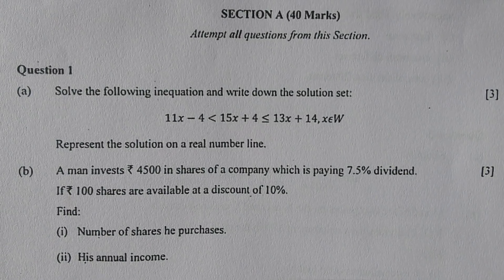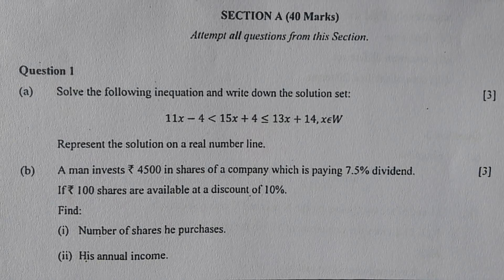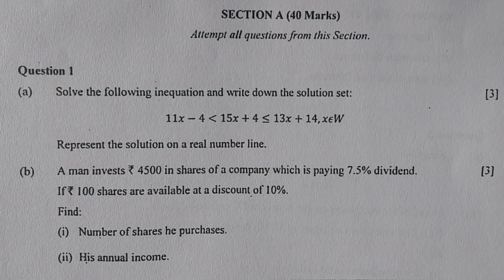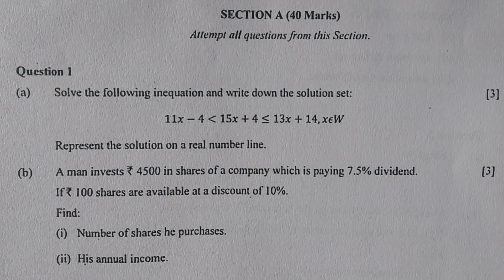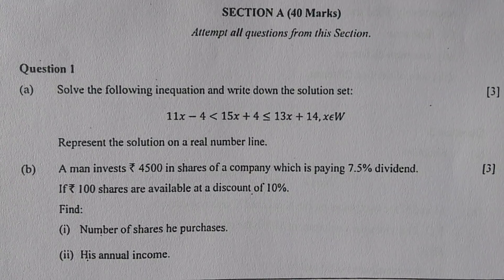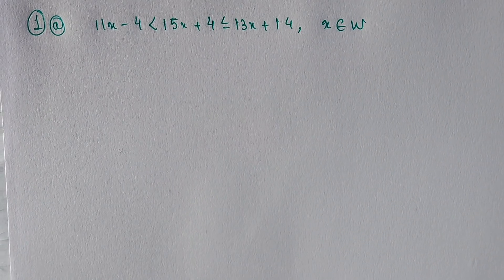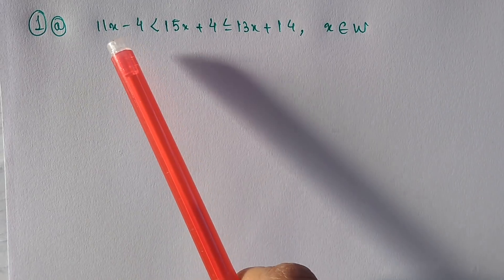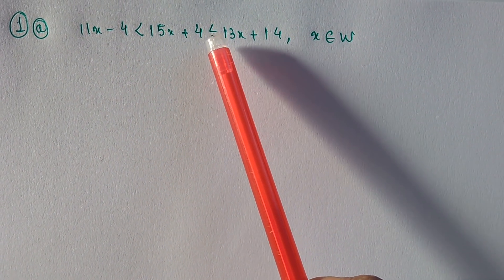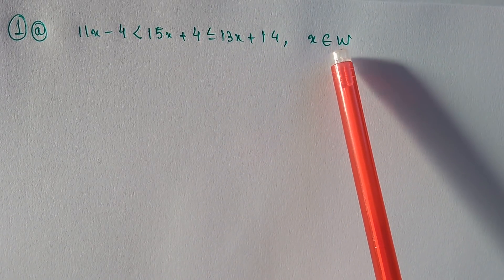We begin with Section A, 40 marks. You have to attempt all the questions from this section. Question 1A: Solve the following inequation and write down the solution set. You have to represent the solution on a real number line. The given inequation is: 11x minus 4 is less than 15x plus 4, which is less than or equal to 13x plus 14, where x belongs to whole numbers.